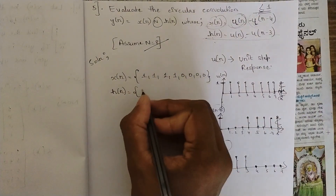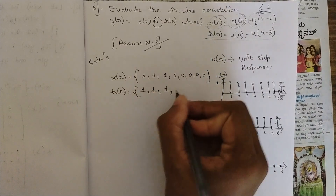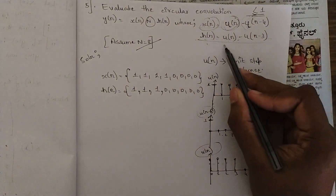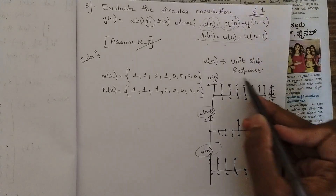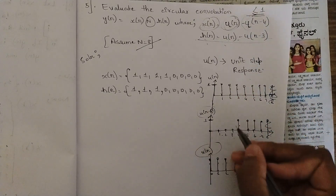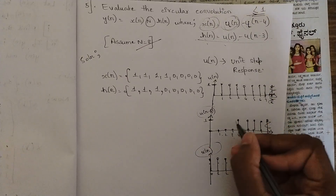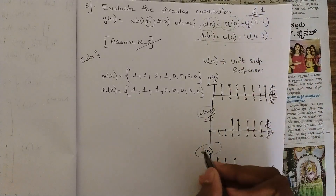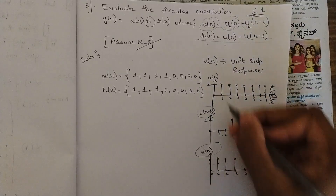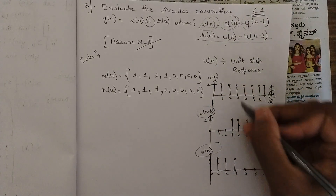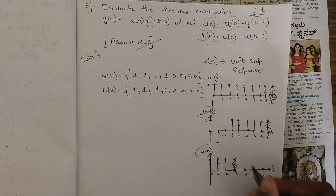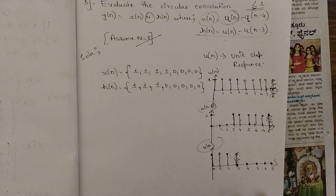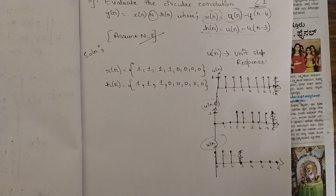Similarly for h(n) = u(n) − u(n−3): u(n−3) starts from index 3. Subtracting amplitudes: at n = 0,1,2 the difference is 1−0 = 1; at n = 3 and beyond it is 1−1 = 0. So h(n) = {1, 1, 1, 0, 0, 0, 0, 0} — three ones followed by five zeros.